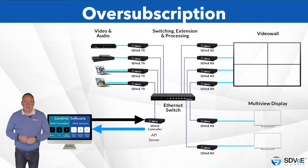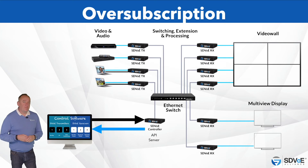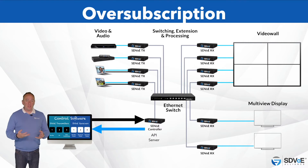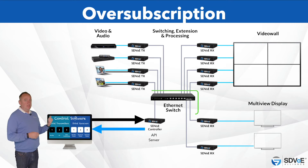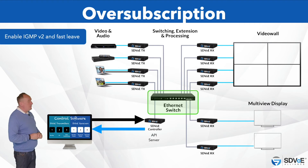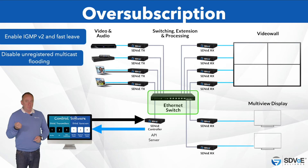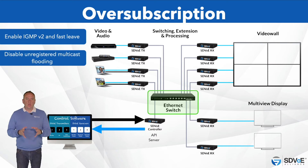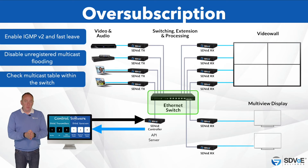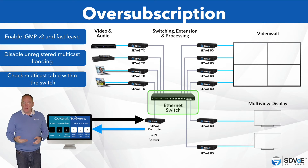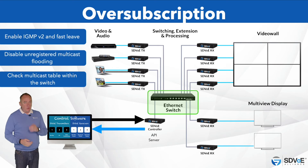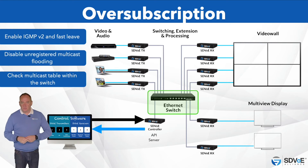Making sure everything is connected and the network is correctly configured is really important. As we learned in the design partner certification course, we should carry out some basic housekeeping on the switch to prevent multicast flooding by enabling IGMPv2 and fast leave, as well as disabling unregistered multicast packets. It's also worth checking the multicast table within the switch to see if multiple streams are hitting a single port when only one stream is expected, because this is a classic sign of oversubscription.